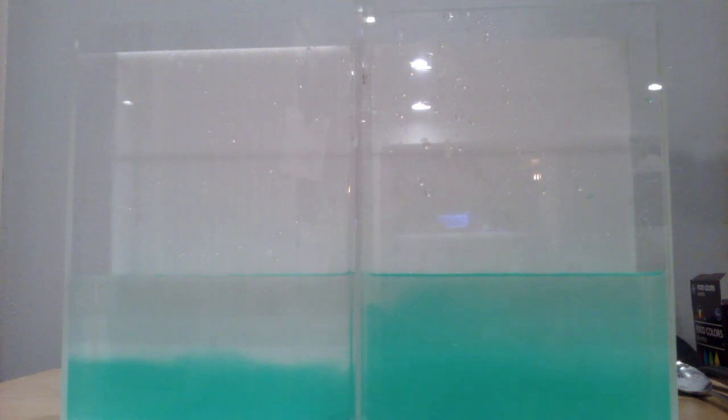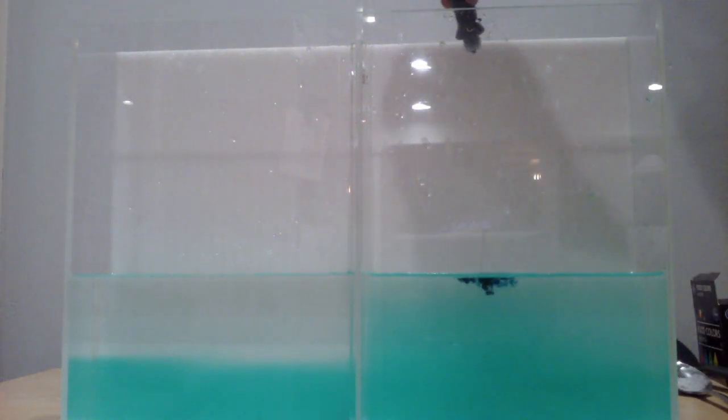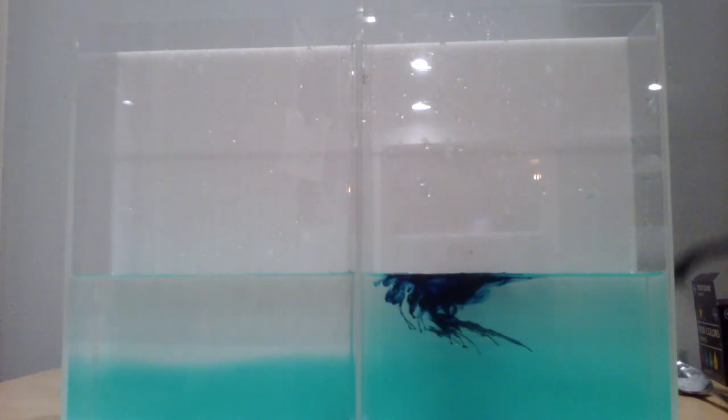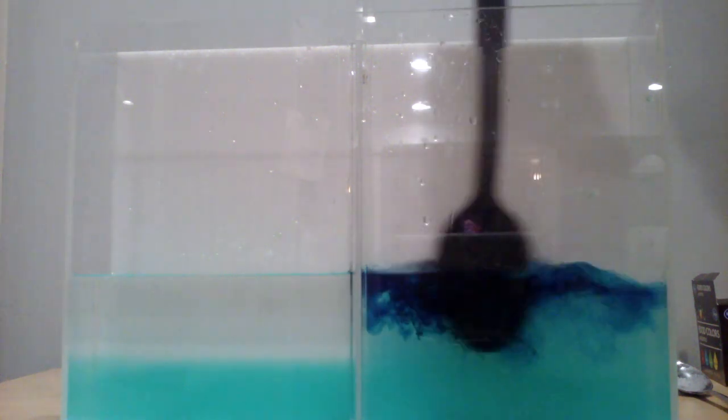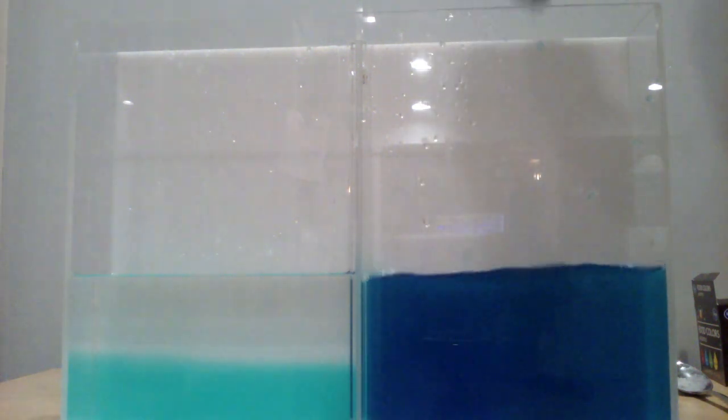So I'm going to stop the flow now and add some blue food coloring to make this side, which is a mixture of both, turn blue. Then we'll open it up again and see if it settles in between these two.